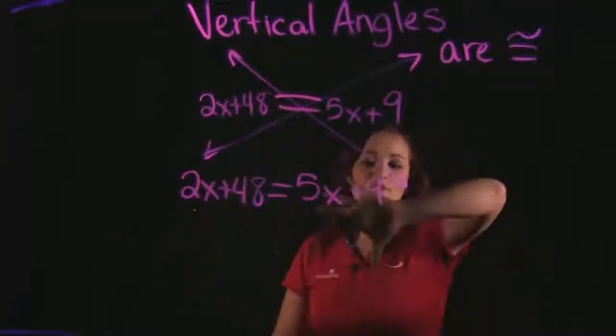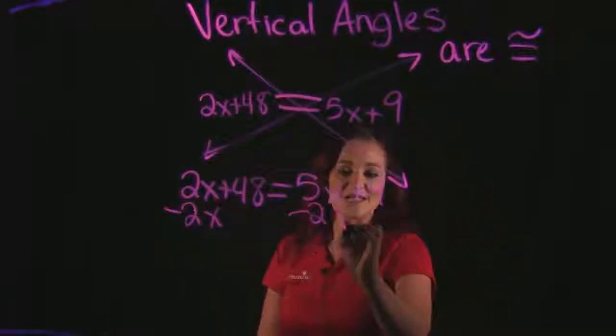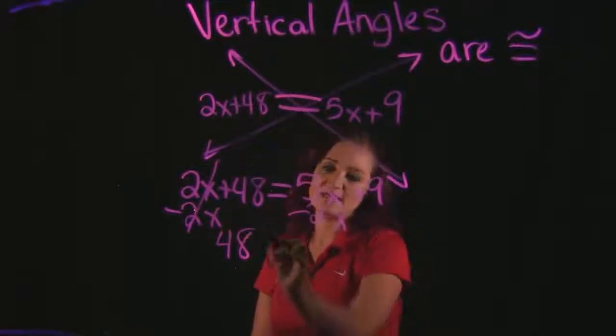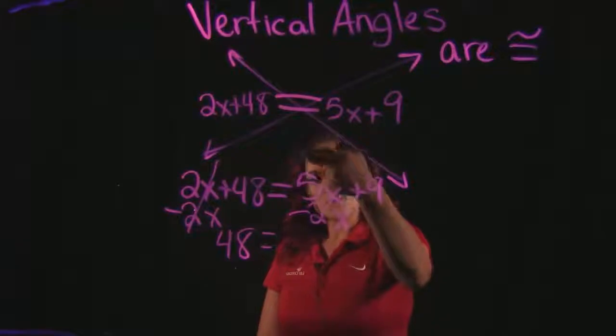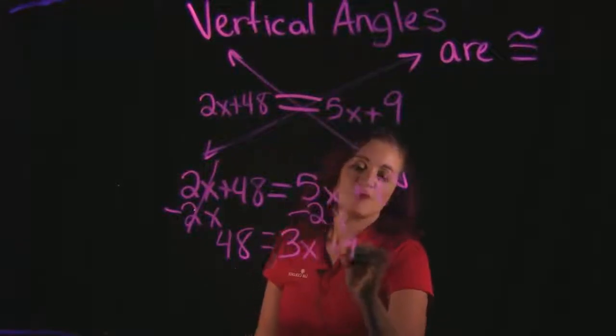So solving this equation, I'm going to move my x values to the right-hand side. I'm going to subtract 2x from each side. That'll cancel on the left-hand side and I drop down the 48. That's going to equal 5x minus 2x is 3x and drop down the plus 9.